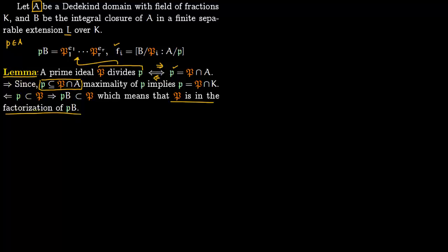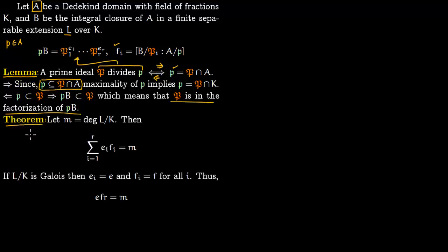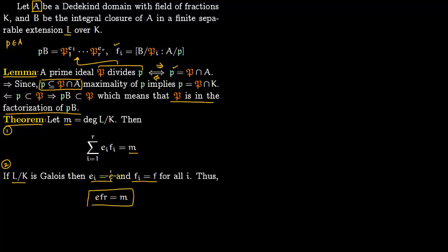This lemma is needed to prove the main theorem. Let M be the degree of extension L over K. Then summing EiFi over all i from 1 to R — where each Fi is the degree of extension for prime Pi — gives M. The second part states that if the extension is Galois, then all Ei are equal to E and all Fi are equal to F, giving EFR equals M.